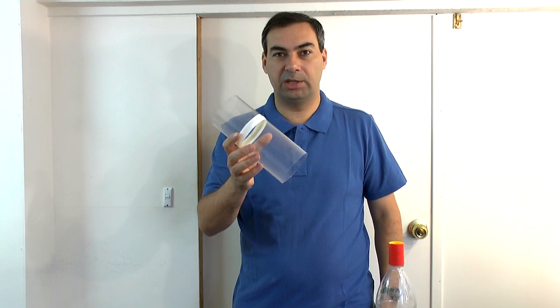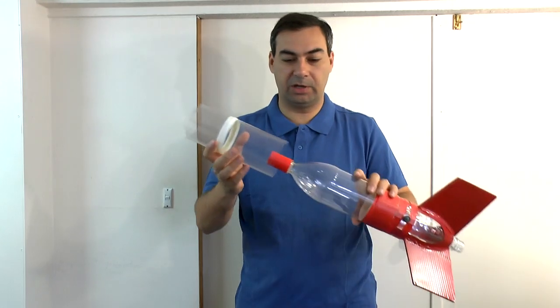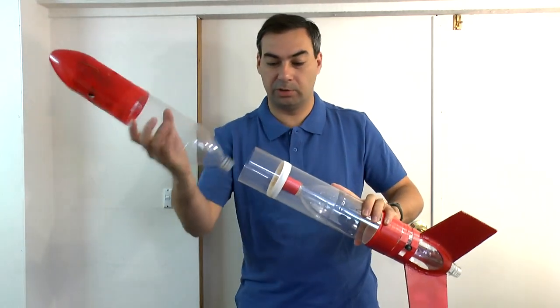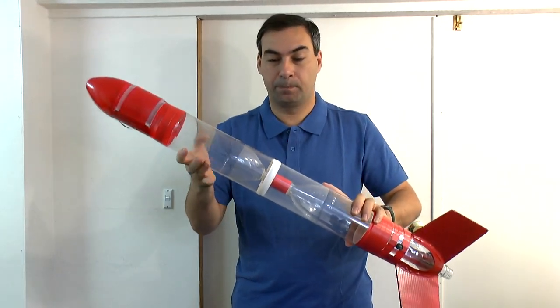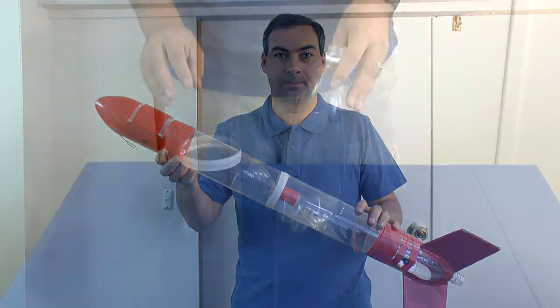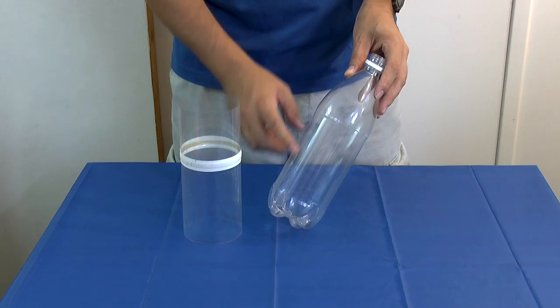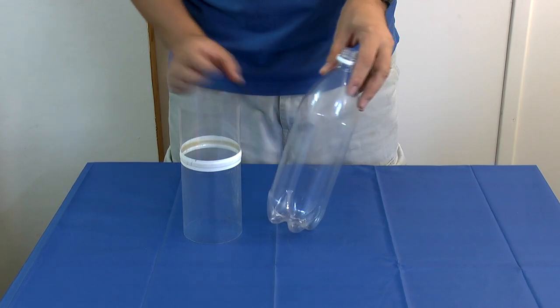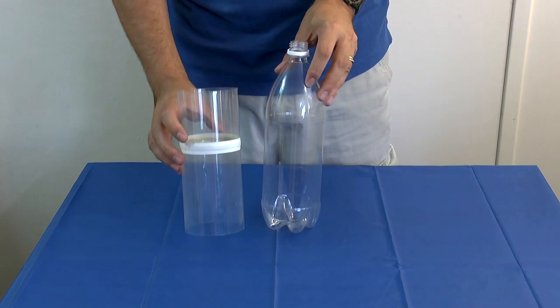Today we're going to look at how to make these inter-bottle fairings that fit on tornado coupled rockets. The problem with making the fairing out of a single bottle is that generally the bottles aren't long enough, so we need to splice two together.